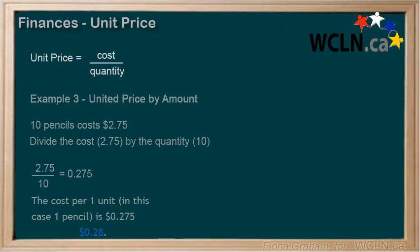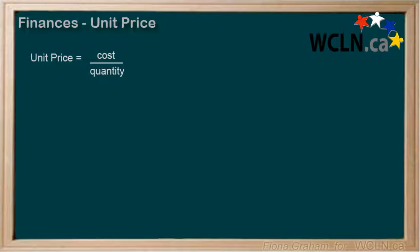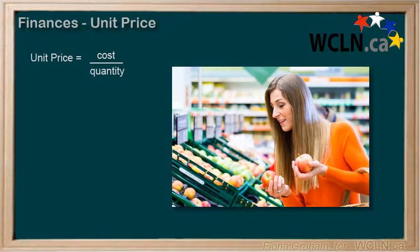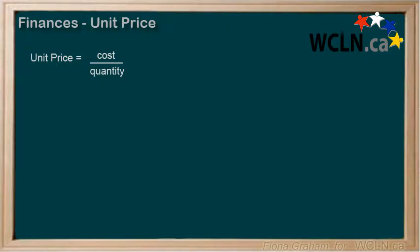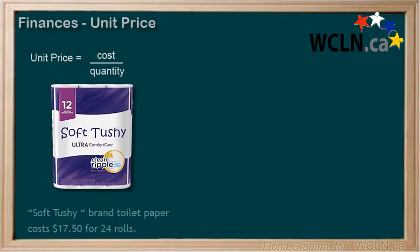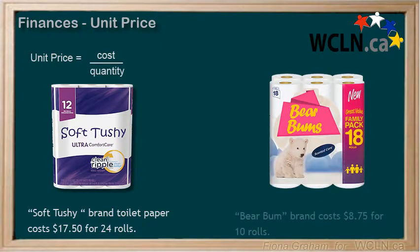It's also important to learn how to calculate a cost comparison. This is where we look at two different products and determine the best value, which saves you money. We can do this by comparing the unit prices — that's why it's so important to know how to calculate it. Let's say you're buying some toilet paper and want to know which brand is the best to buy. Soft Tushy brand costs $17.50 for 24 rolls, whereas Bare Bum brand costs $8.75 for 10 rolls.